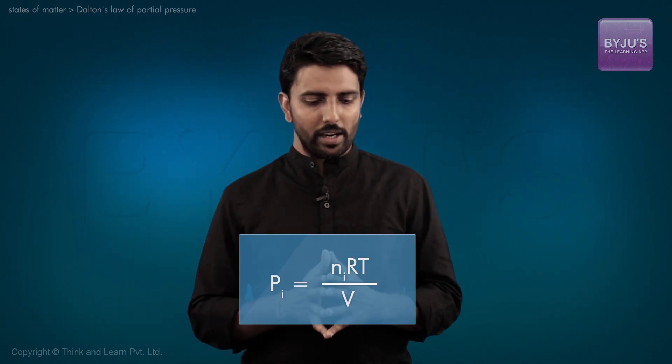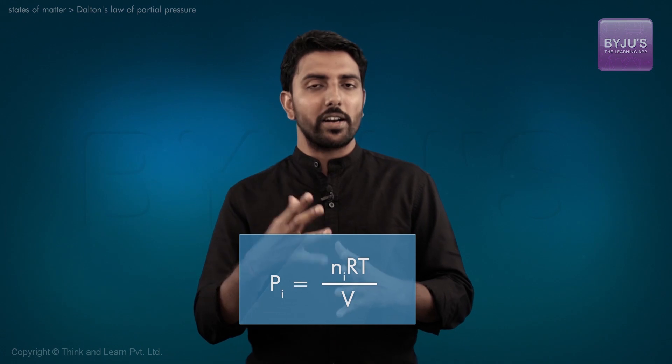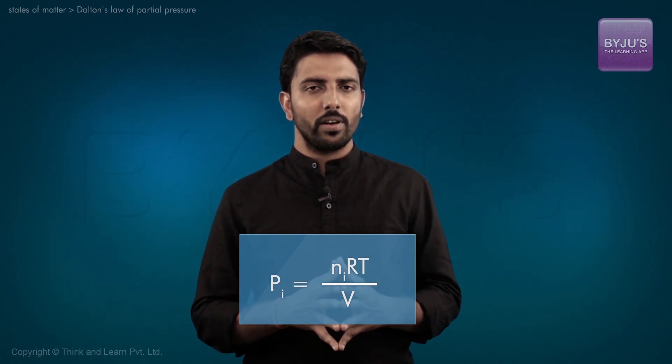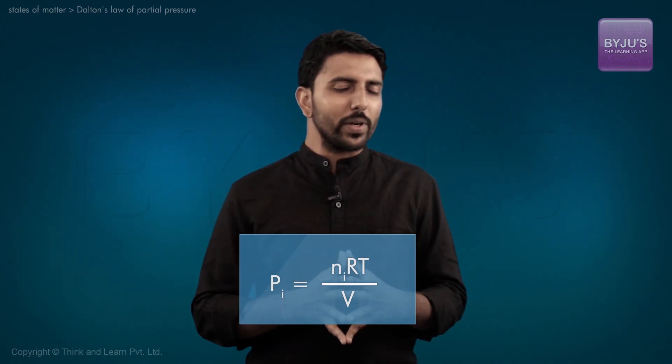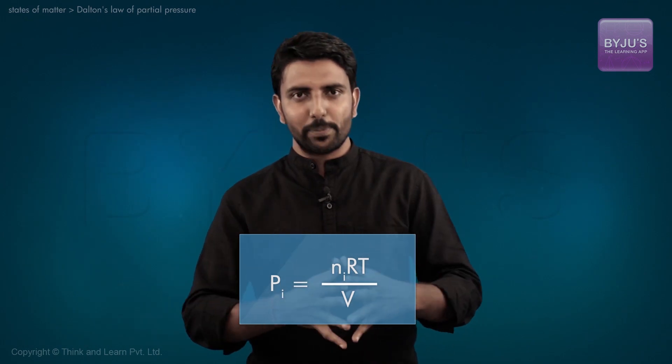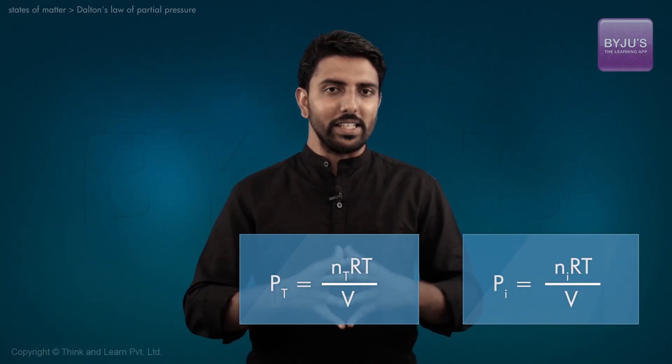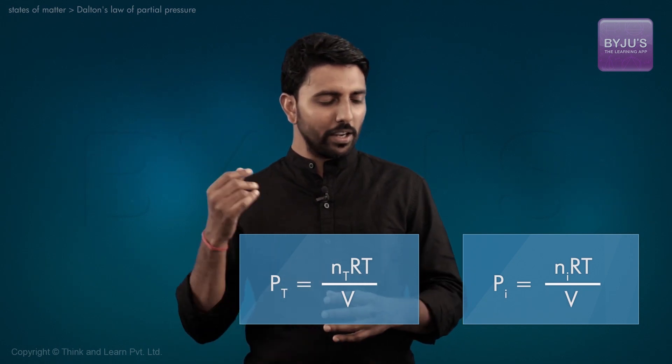The partial pressure of any particular component i in the mixture is given by Pi equals Ni RT times V. If we recall the overall equation of state, the ideal gas expression, we know that the total pressure PT is given by Nt RT by V.